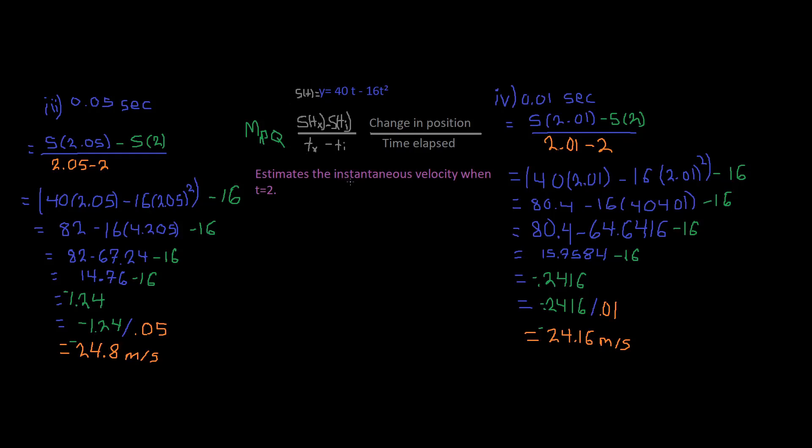In order to find the instantaneous velocity, we need to get really, really close to the point of interest, which is p. So we really want to get as close as we can get to p. We're trying to get our secant line close to p. So we plug in these numbers, we end up getting negative 0.2416, we divide that by 0.01, and it ends up becoming 24.16 meters per second.